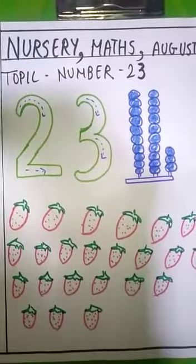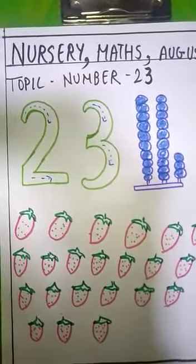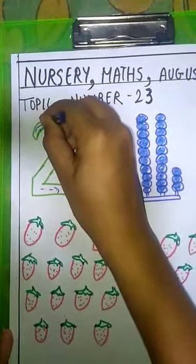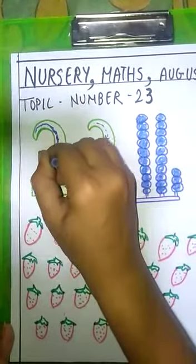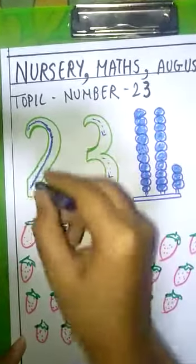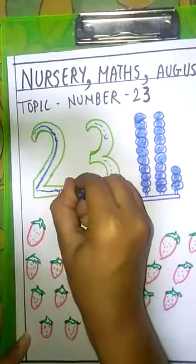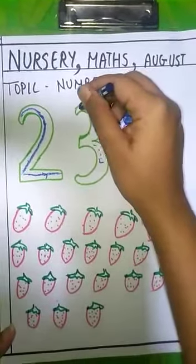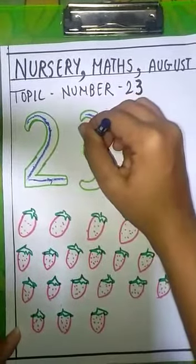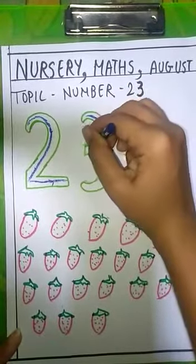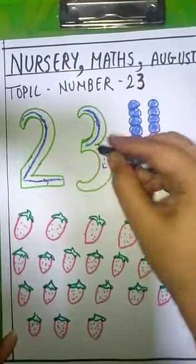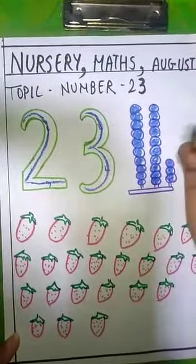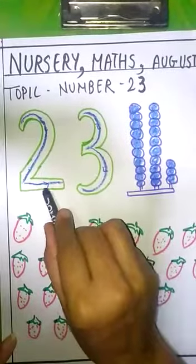Now, let's learn the formation of number 23. Start from the dot, make a curve and then sleeping line. Start, round, make a left curve and then curve 3. Number 23.